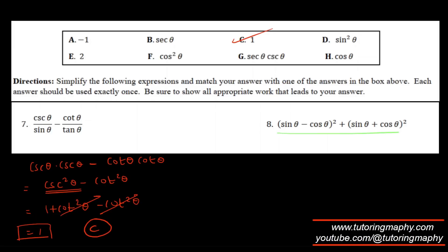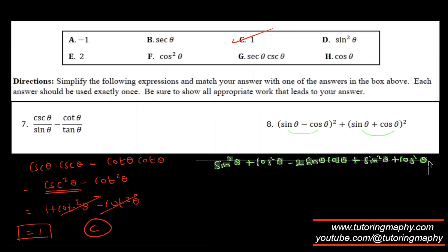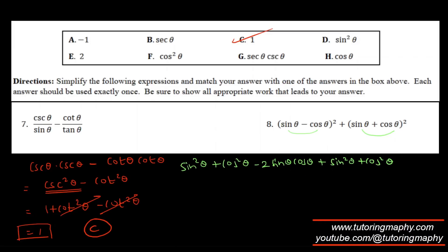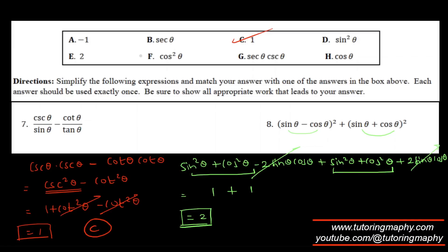Finally, for question 8, I use the algebraic identities (a−b)² and (a+b)², which expand to a² + b² − 2ab and a² + b² + 2ab respectively. Adding them, the ±2sinθcosθ terms cancel. We're left with 2sin²θ + 2cos²θ = 2(1) = 2 — so the answer is 2.